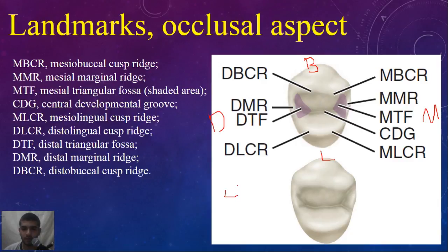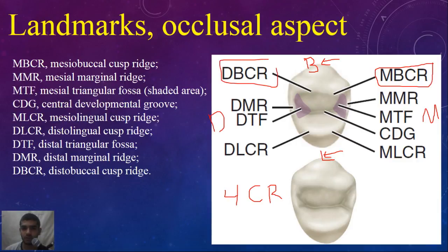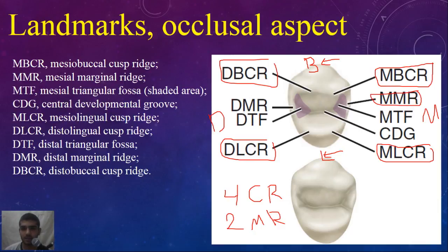We have four cusp ridges: two located buccally and two located lingually. The buccal ones are the mesial buccal cusp ridge and the distal buccal cusp ridge. The lingual ones are the mesial lingual cusp ridge and the distal lingual cusp ridge. We have two marginal ridges: the mesial marginal ridge and the distal marginal ridge. We have two triangular fossae: the mesial triangular fossa and the distal triangular fossa. And finally, we have the central developmental groove.